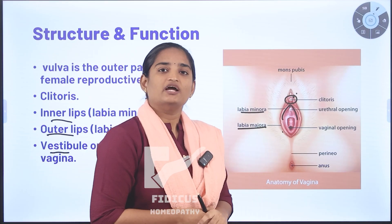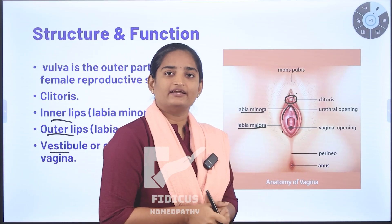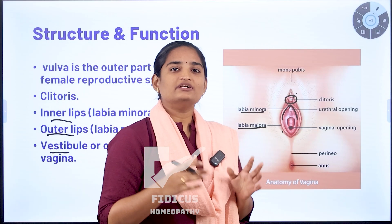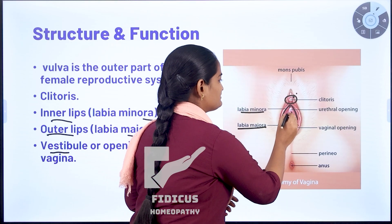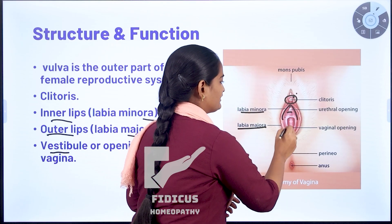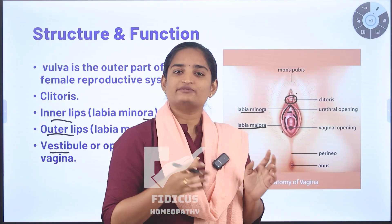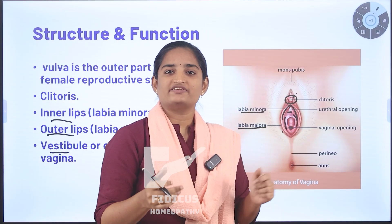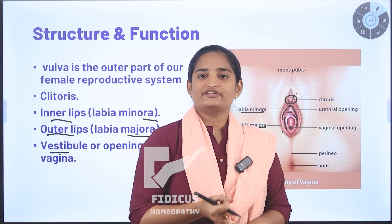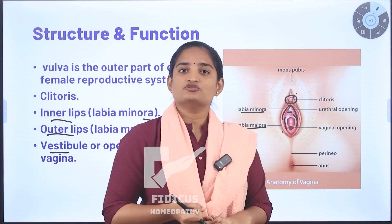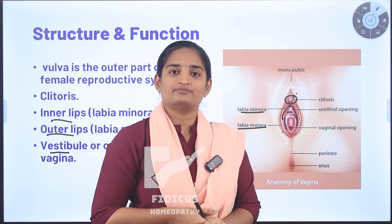Now coming to vestibule. Vestibule is an area without having any hair. This vestibule lies between labia minora. This vestibule is the opening of the vagina. Through this vestibule, urination and also menstrual blood and also childbirth takes place.